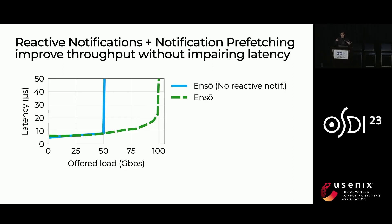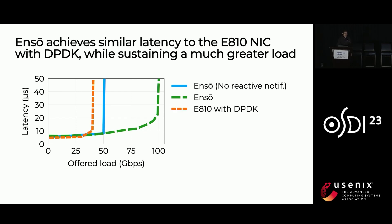When we look at the two different notification mechanisms, we can see the effects of ANSO sending a notification for every packet, which is the blue line, as well as ANSO with both mechanisms. As we increase the load, ANSO with reactive notifications and notification prefetching can achieve much higher loads without compromising latency. Comparing to the 810 NIC, which is the state-of-the-art Intel NIC, we achieve comparable latency with a much greater load.